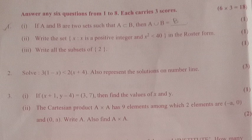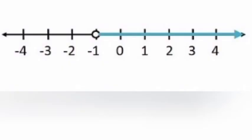Solve: 3 - x < 2x + 4. Also represent the solutions on a number line. 3 - 3x < 2x + 8. Minus 3x - 2x < 8 - 3. Minus 5x < 5. Dividing both sides by 5: -5x/5 < 5/5. Minus x < 1.